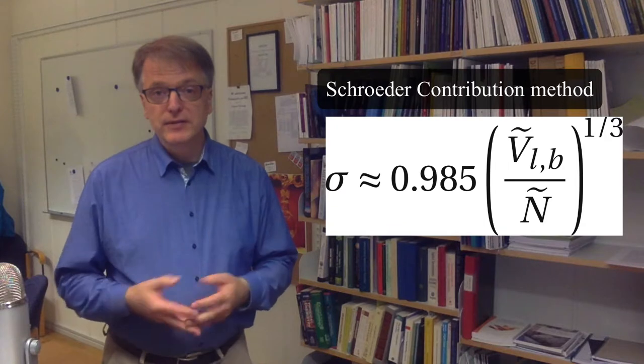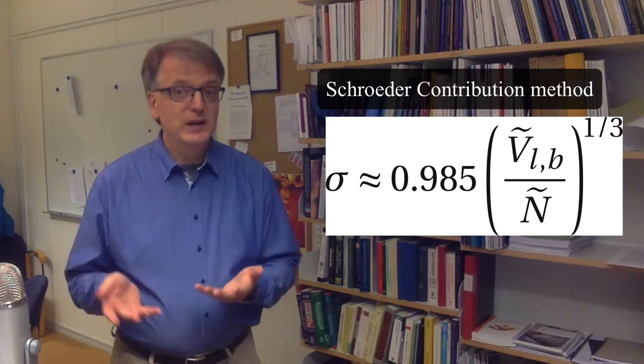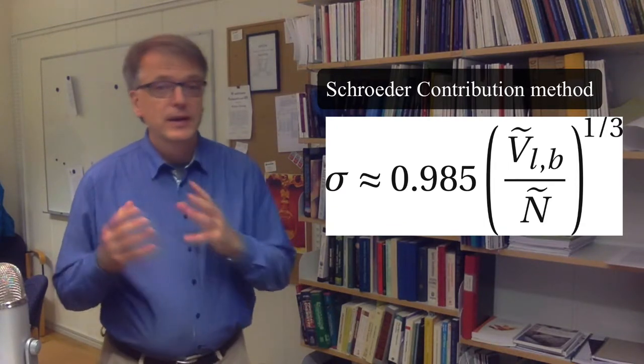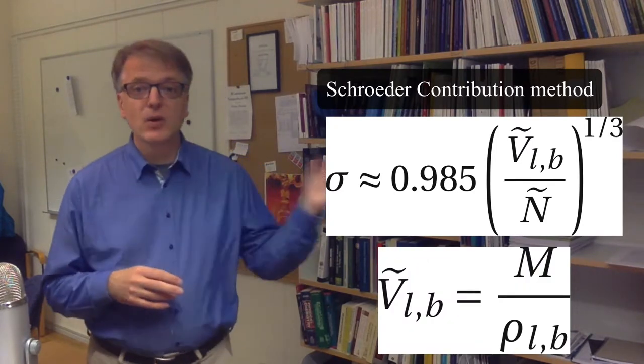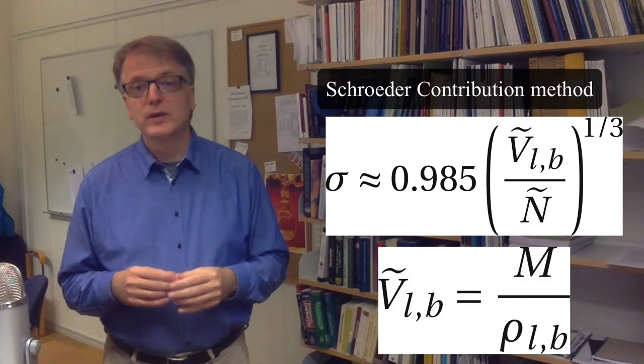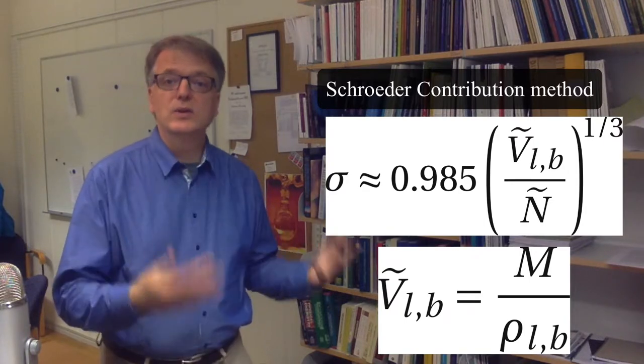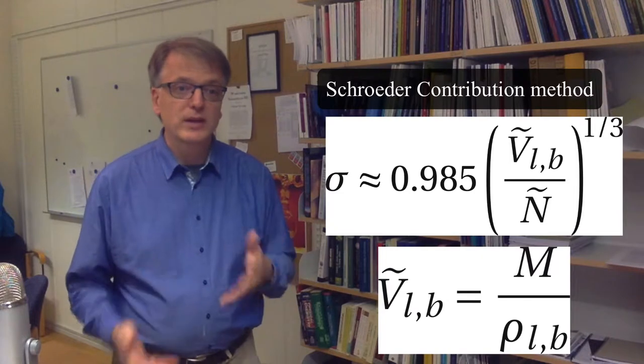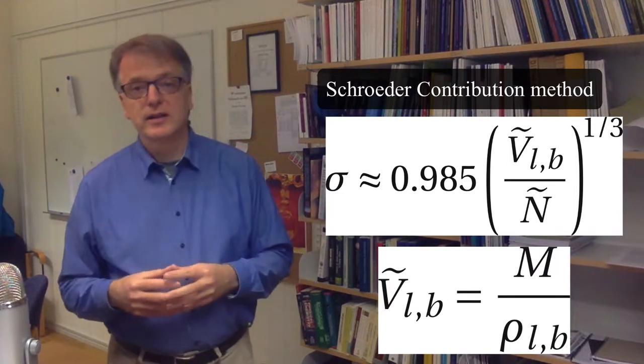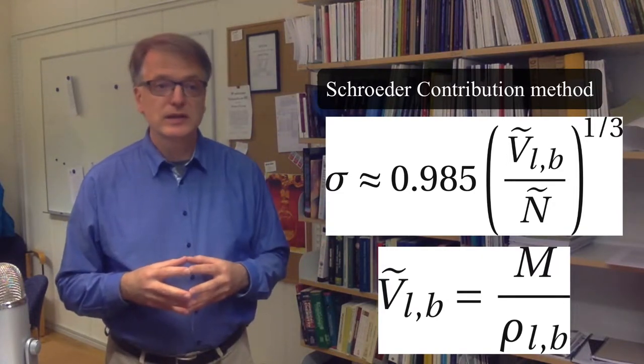An alternative is that if you have the density at the boiling point, you can simply take the molar mass and divide that with the density at the boiling point and then you get the molar volume at the boiling point and then you can take that and calculate the characteristic collision diameter.